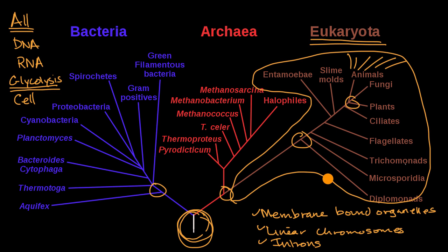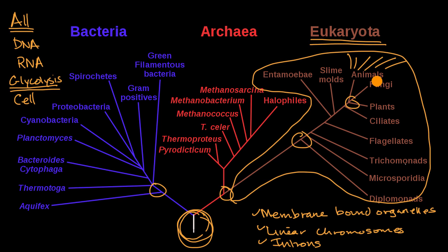And based on how similar things are, that's where we theorize when things might have branched off. Now that we have more sophisticated tools of sequencing DNA and RNA, we can look at how different those sequences are to construct more and more precise trees like this.